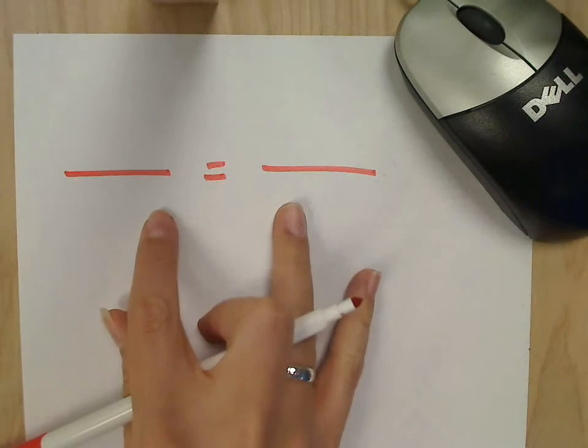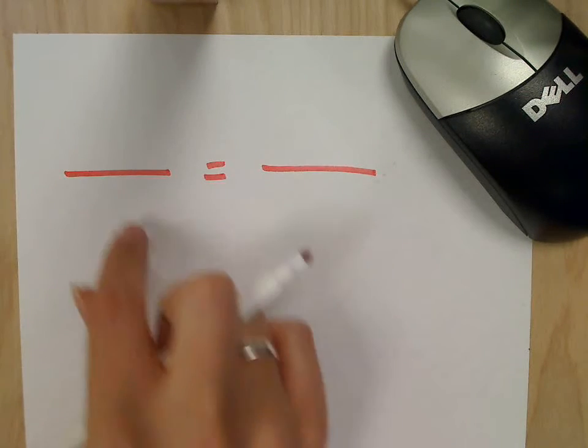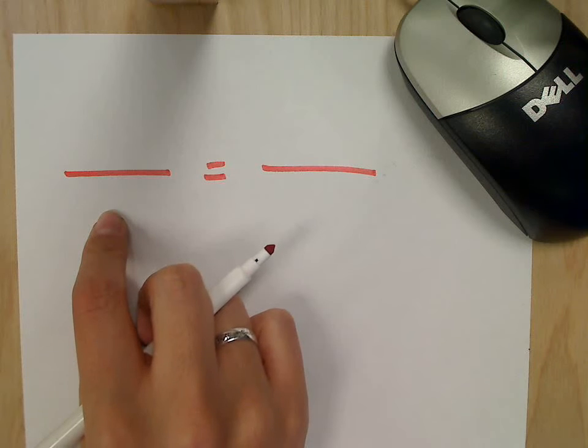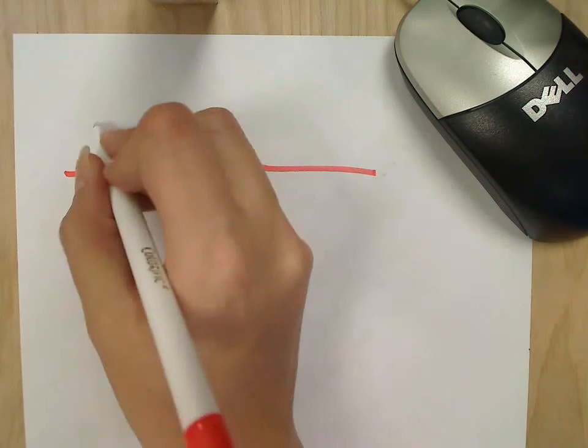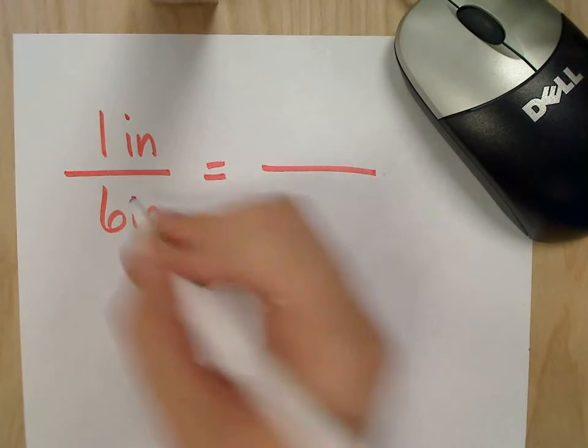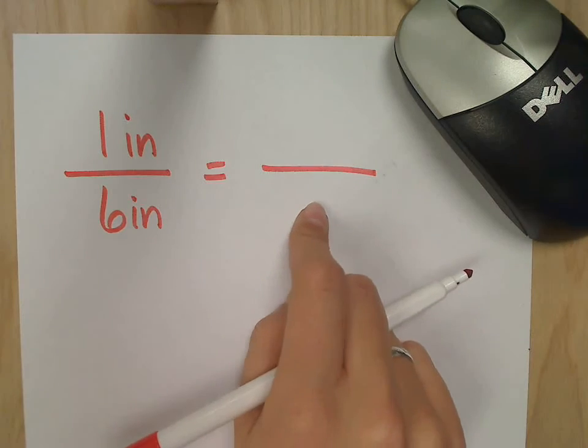So just like before, 2 ratios. What would you like for your first ratio to look like? 1 over 6? Okay, that's my scale, 1 inch to 6 inches. Then what's my second ratio going to look like?